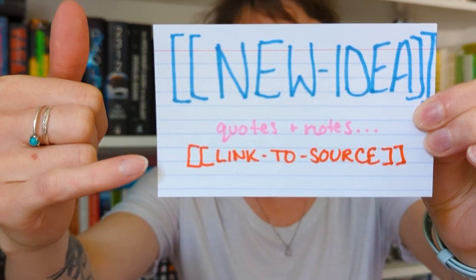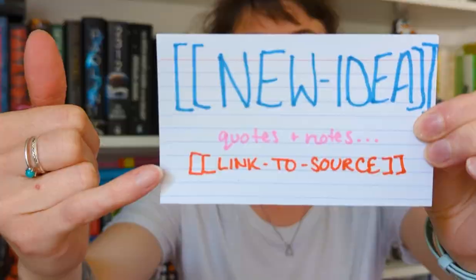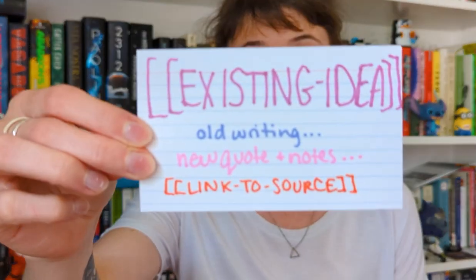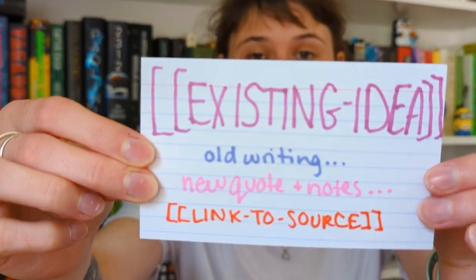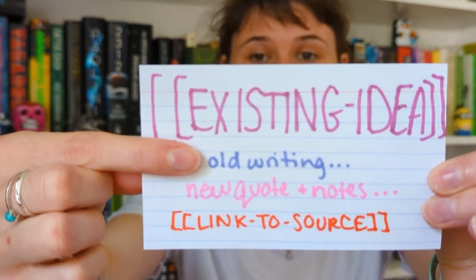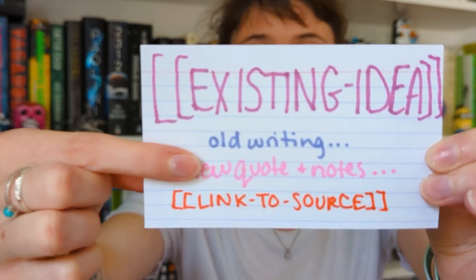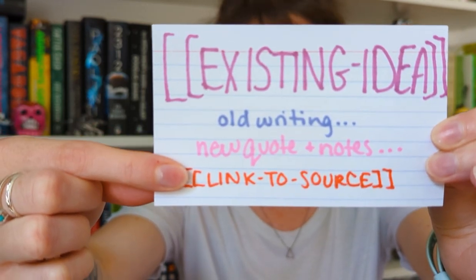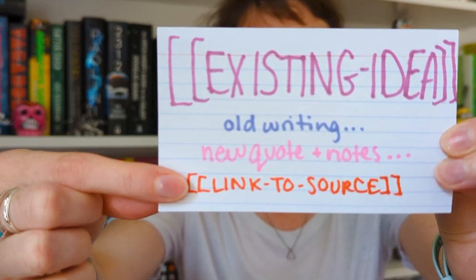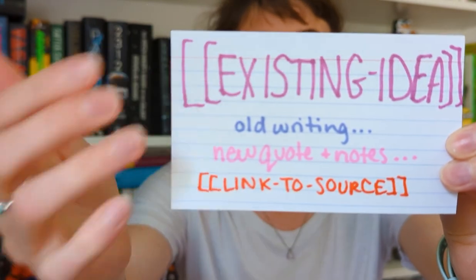I will also start connecting to other ideas that are within my Zettelkasten. Alternatively, sometimes a quote I'm putting into my system already relates to an idea that is existing already in my Zettelkasten. So I'll hop into this existing idea's note — I've got my old writing already in there — I just need to add in the new quote and the new notes. And then of course, link back to the source and link to anything else that is already existing that I haven't already linked to within this note.